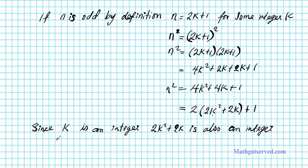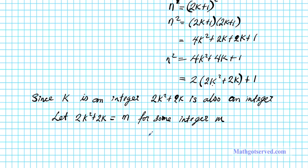Alright, so let's go ahead and give this quantity a name. Let 2k squared plus 2k equal m for some integer m. So how can we express n squared using our new variable? n squared is now going to be 2 times m plus 1.